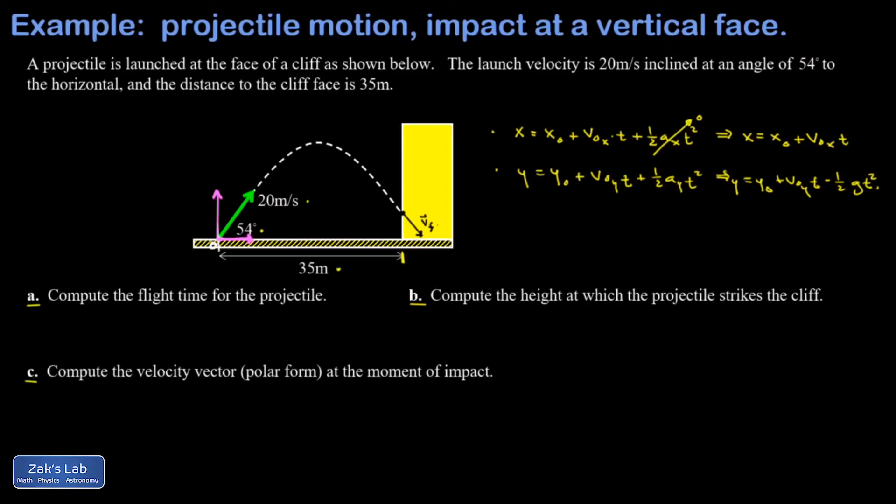I'm going to get hypotenuse times the cosine of 54, so vx is 20 cosine 54 degrees. I may as well get a decimal approximation. Working to three sig figs, that's 11.8 meters per second.